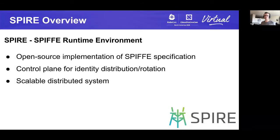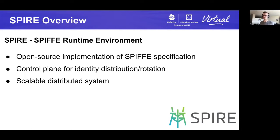So what is SPIRE? SPIRE is the SPIFFE Runtime Environment, and it's an open source implementation of the SPIFFE specification. It implements the identity primitives defined in the spec. It is essentially a control plane — what we'd like to call an identity plane — for managing distribution and rotation of identities throughout an environment. It's designed as a scalable distributed system intended to meet the needs of large environments with many applications and microservices running concurrently.